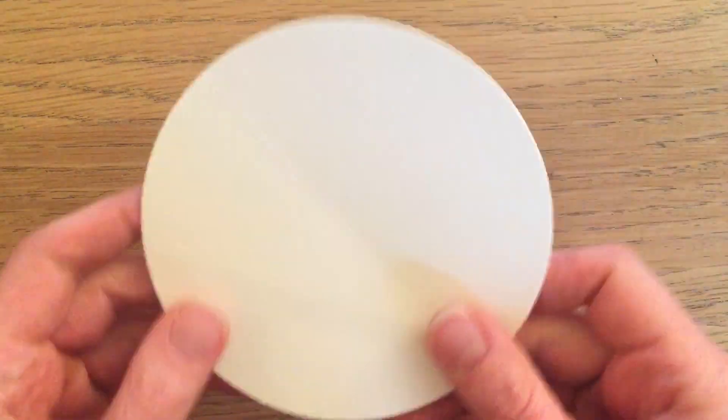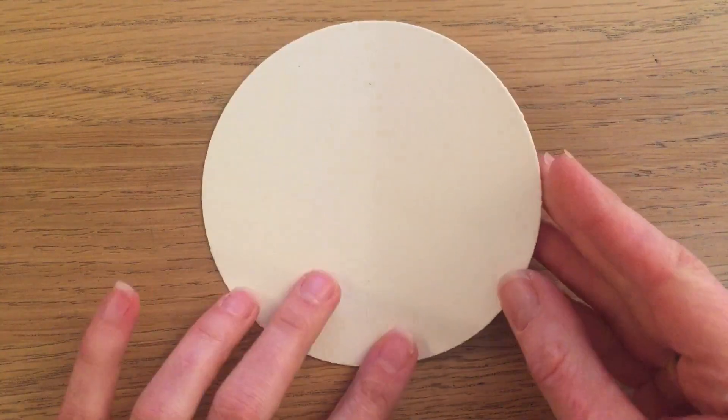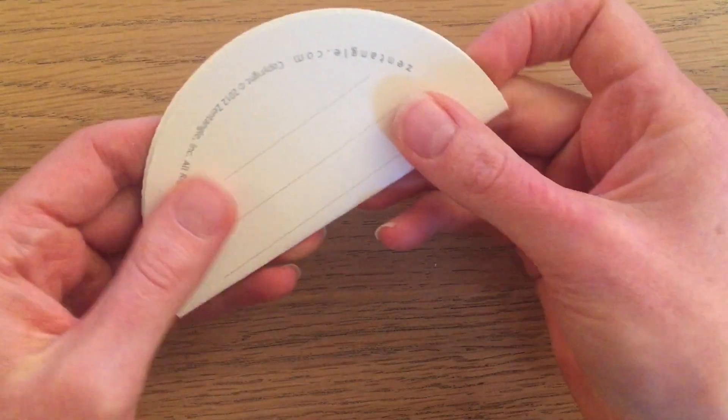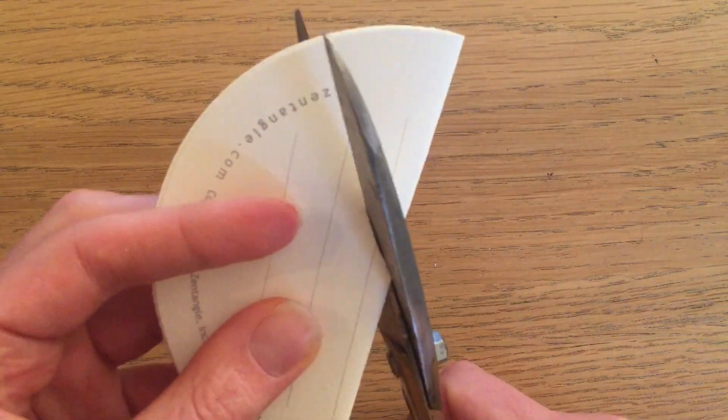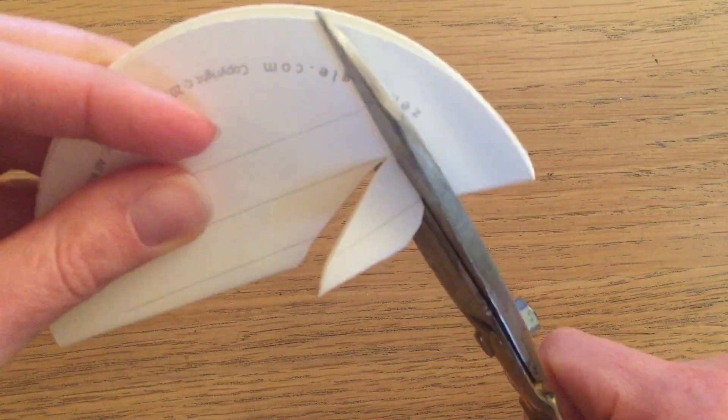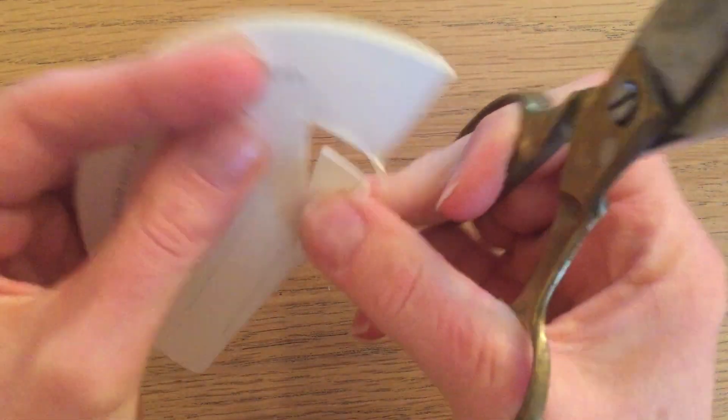That's pretty much it. I'm going to show you guys one more time with another one. Simply fold it in half. Quick crease, not too much. Take your scissors.